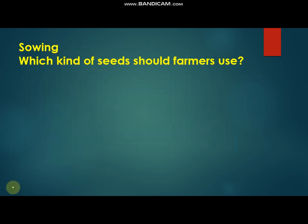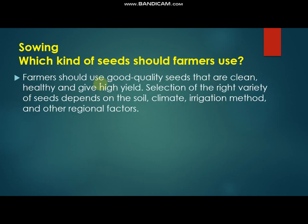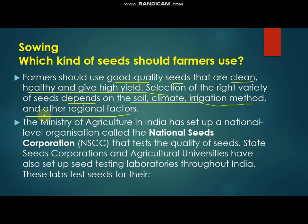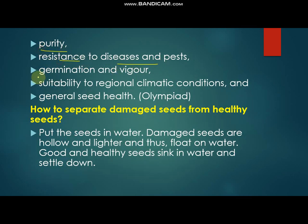Which kind of seed should a farmer use? This is an important topic — the selection of the seed. Farmers should use good quality seeds that are clean, healthy, and give high yield. The selection of the right variety depends on the soil, climate, irrigation method, and other regional factors. The Ministry of Agriculture in India has set up a national-level organization called the National Seed Corporation (NSC) that tests the quality of seeds. State Seed Corporations and Agriculture Universities have also set up seed testing laboratories throughout India. These labs test seeds for purity, resistance to disease and pests, germination and vigour, suitability to regional climate conditions, and general seed health.